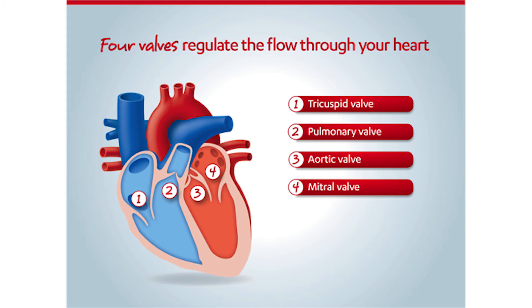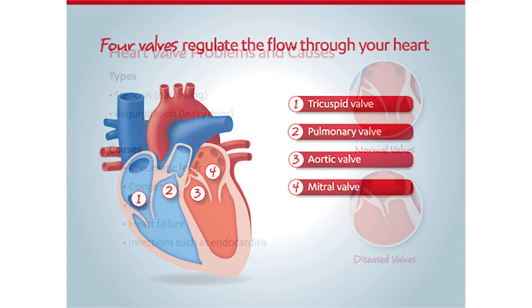The mitral valve controls blood flow between the top and bottom of the left sides of the heart. The aortic valve prevents blood from leaking back into the left ventricle after it is pumped out to the rest of the body.